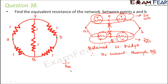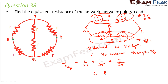So 1/R_equivalent = 1/2R + 1/2R = 2/2R, therefore R_equivalent = R. This is the equivalent resistance of the network.